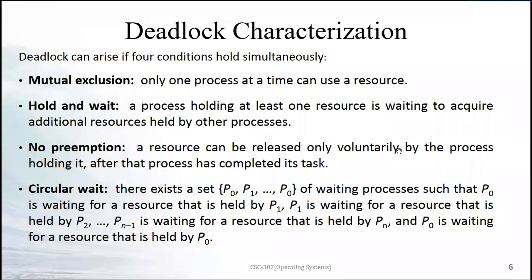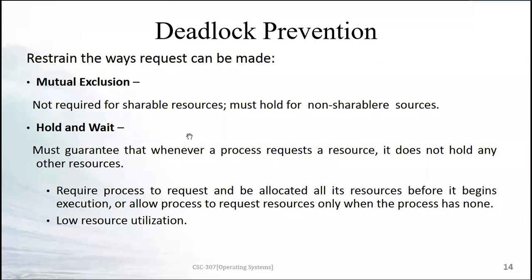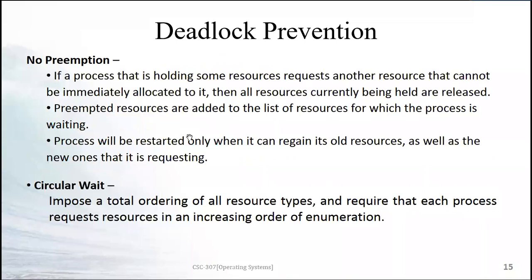The no-preemption rule originally said a resource can be released only voluntarily. The new prevention rule changes this: if a process holding some resources requests another resource that cannot be immediately allocated, all resources currently held by that process are released. So if you have a keyboard and are waiting for a mouse and monitor that will not be free for an hour, the operating system takes back the keyboard as well.